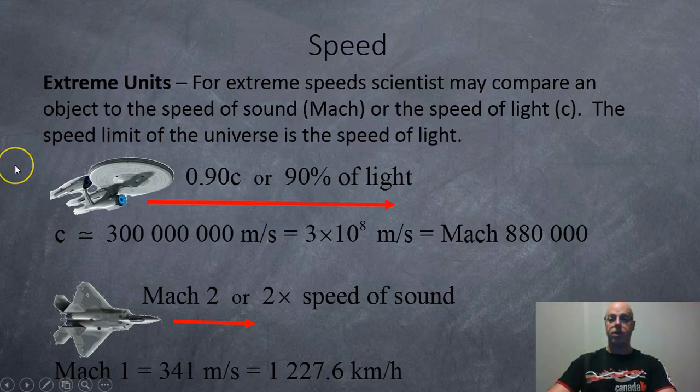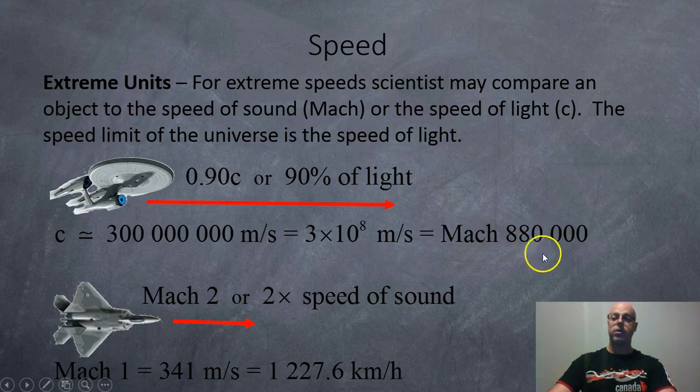Extreme units. For extreme speeds scientists may compare an object to the speed of sound, Mach, or the speed of light, C. The speed of light is approximately 300 million meters per second or around 3 times 10 to the 8 meters per second. And that works out to be Mach 880,000. So light's about 880,000 times faster than sound. Mach 1 is around 341 meters per second, which works out to be about 1,227.6 kilometers per hour. So if you're doing Mach 2, that means you're doing 2 times 341 meters per second. And if you're doing 0.9C or 90% of the speed of light, that's 0.9 times 300 million. And that would be 270 million meters per second.